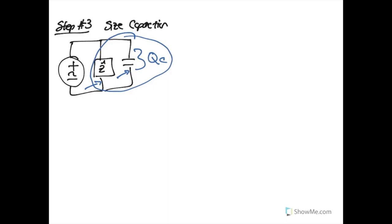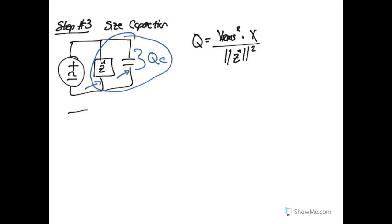To begin, recall that reactive power can also be expressed as VRMS² times the reactance of a load, divided by the square of the total impedance of that load. This comes from our equation sheet.